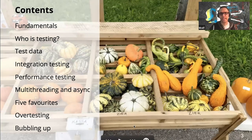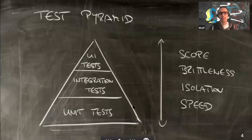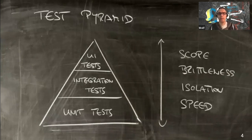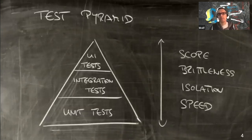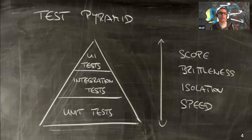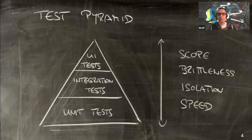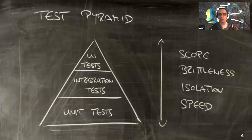Let's get started with the fundamentals. I'd like to begin with the test pyramid, which underpins much of how we reason about testing. The test pyramid is a model where tests are put into three buckets: unit tests, integration tests, and UI tests. Unit tests test the smallest possible element in isolation — typically a single class or method — and if a method can't be tested in full isolation, we use mocking frameworks.